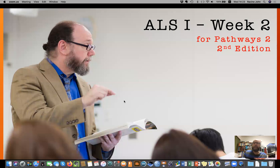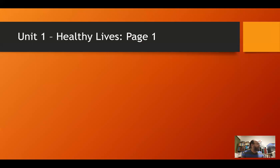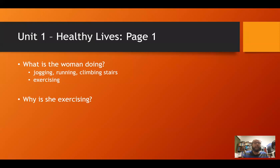Let's get started with the textbook. Take a look at page one — Unit One, page one. It says at the top 'Healthy Lives,' which could be a good topic. On page one there is a lady and she's doing something. Think about that for yourselves. She's running, or we could say she's jogging, she's climbing the stairs, or more generally we could say she's exercising, getting her exercise.